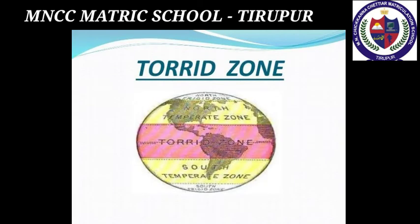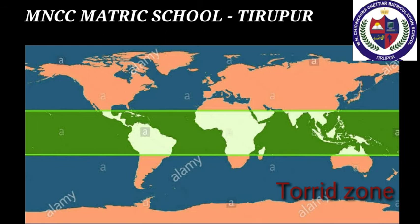Torrid zone: it is the region between the Tropic of Cancer and the Tropic of Capricorn. This region receives the direct rays of the sun and gets the maximum heat from the sun. This zone is known as the torrid or tropical zone.